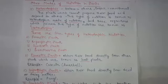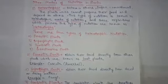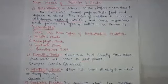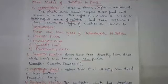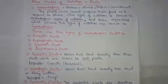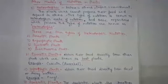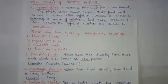They secrete digestive juices and convert it into a solution. This mode of nutrition in which organisms take nutrients in solution from dead and decaying matter is called saprophytic nutrition. The organisms which use this kind of nutrition are called saprotrophs.